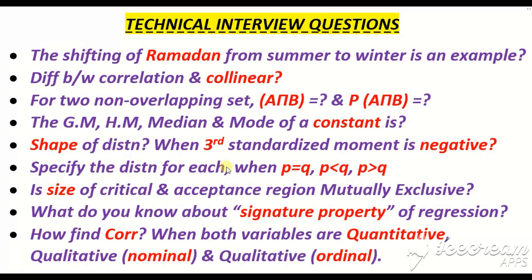Specify the distributions for each case of a binomial distribution. When P is equal to Q — that is, the probability of success equals the probability of failure — then the distribution is symmetrical, giving a bell shape. When P is less than Q — probability of success is less than probability of failure — then the distribution is positively skewed. And when P is greater than Q, the distribution is negatively skewed.